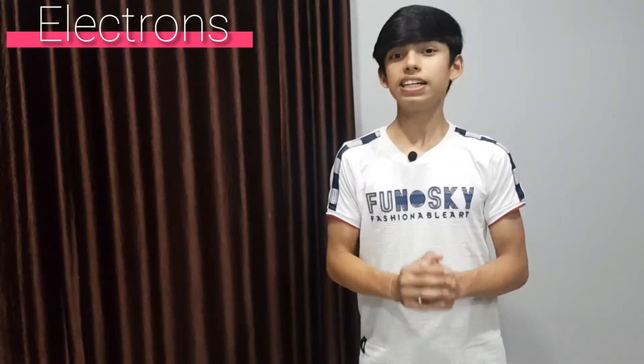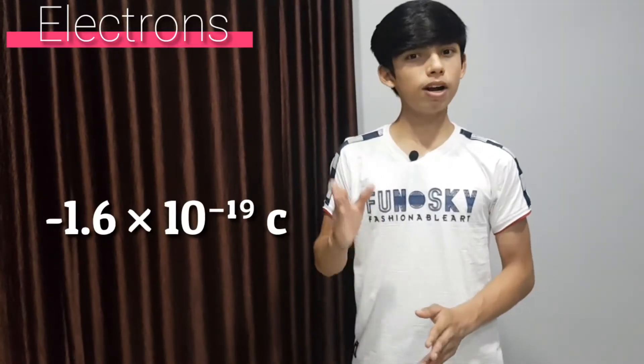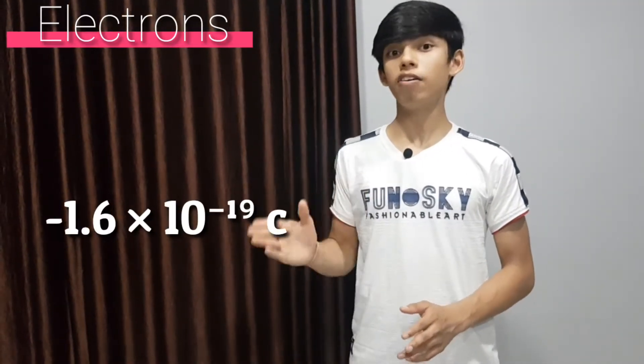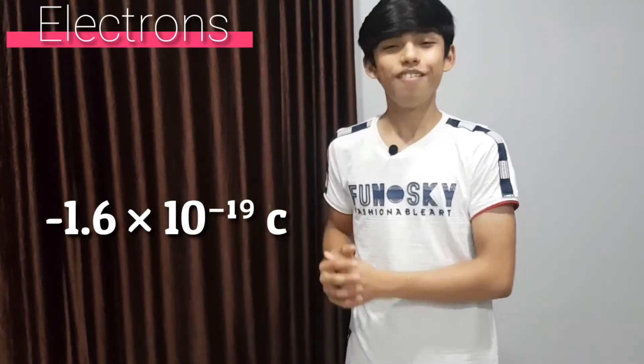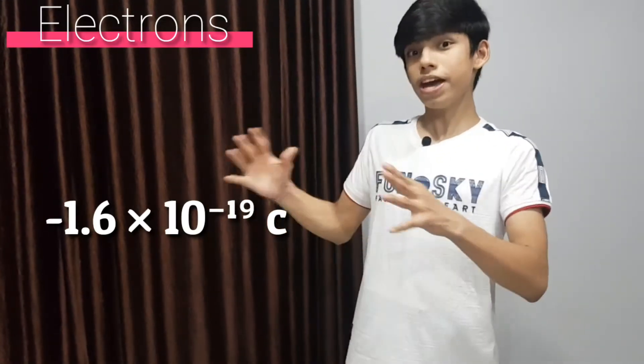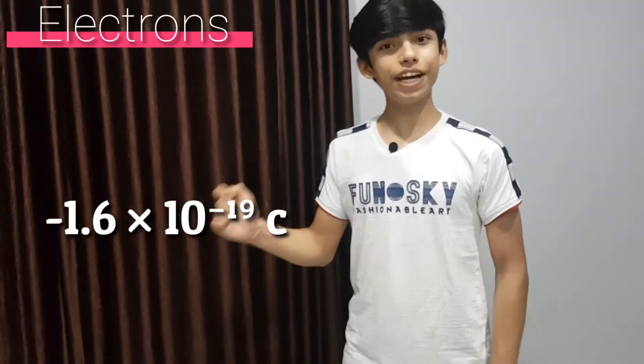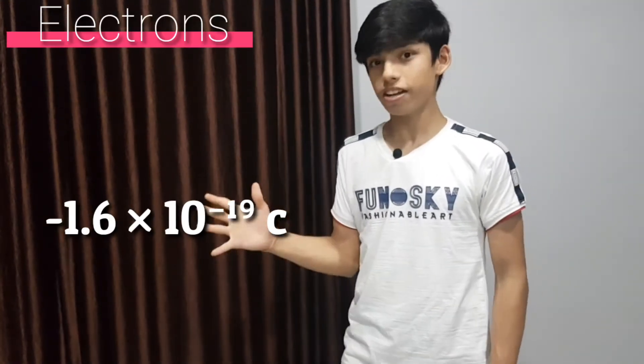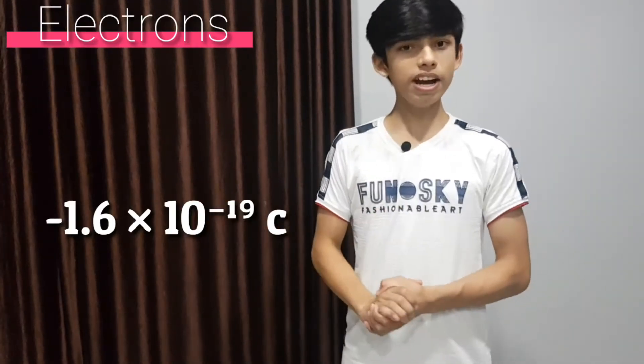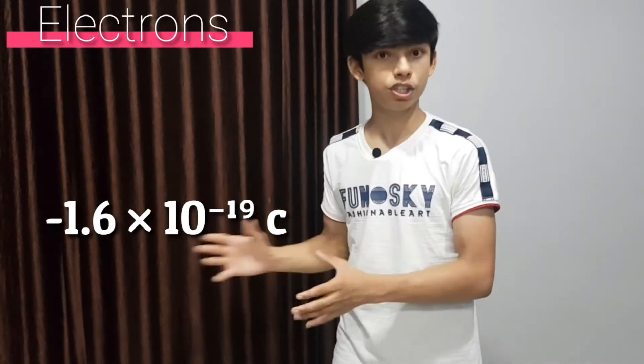Now it is the time to play with some numbers. As I told you, electrons have a negative charge. How much? What is the value of the charge? Well, an electron contains a charge of minus 1.6 × 10⁻¹⁹ coulombs. This number is quite big to pronounce, but actually it is a very small number — 10 to the power minus 19. One electron contains this much charge.